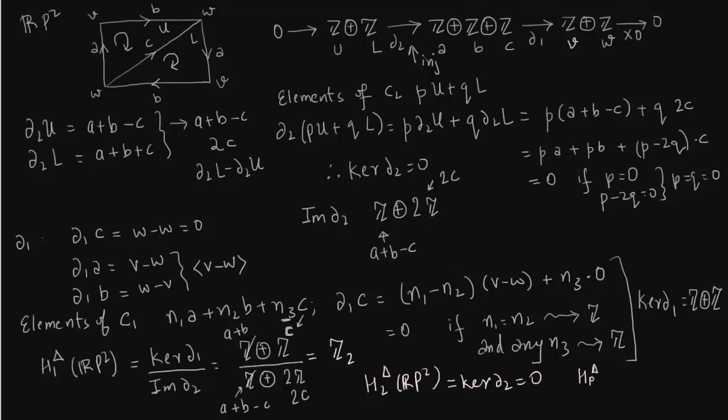What about H1 or H0? This is nothing but kernel of delta 0 which is Z plus Z. We have seen that image of delta 1 is generated by V minus W. This is nothing but Z because in the numerator you could change V and W to V plus V minus W. Then V minus W will cancel out and you will get integers. For 3 and higher dimensions it is 0 because there are no polygons in 3 and higher dimensions in our chain complex. It ends at C2.